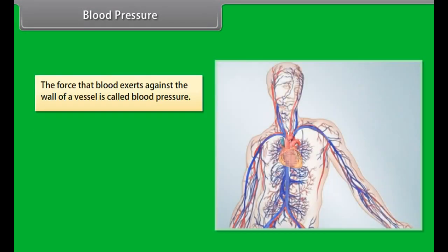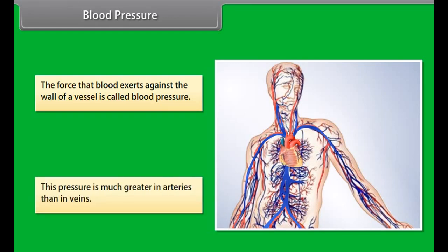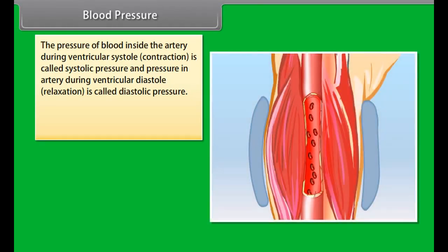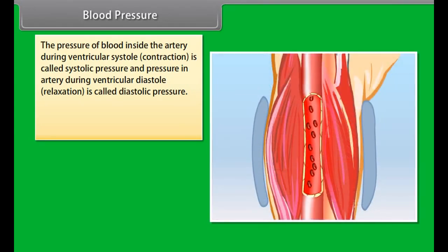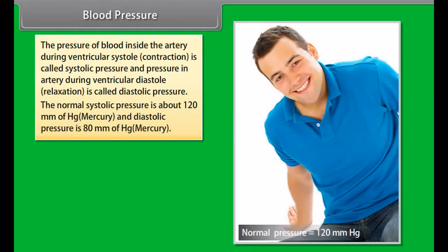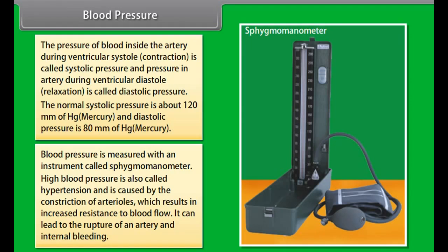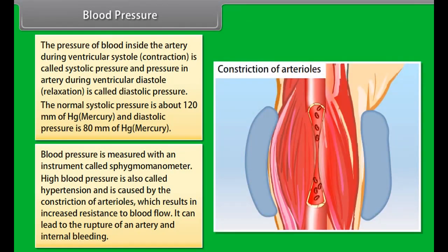Blood pressure is the force that blood exerts against the wall of a vessel. This pressure is much greater in arteries than in veins. The pressure of blood inside an artery during ventricular systole (contraction) is called systolic pressure, and during ventricular diastole (relaxation) is called diastolic pressure. Normal systolic pressure is about 120 mm of mercury and diastolic pressure is about 80 mm of mercury. Blood pressure is measured with an instrument called a sphygmomanometer. High blood pressure, called hypertension, is caused by the constriction of arterioles, which increases resistance to blood flow and can lead to rupture of an artery and internal bleeding.